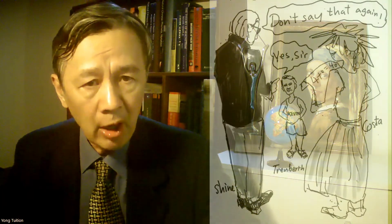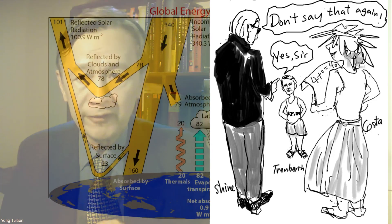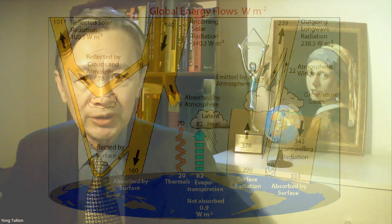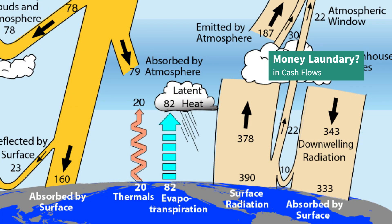In his recent article of autobiographical style, Kevin Trenberth highly regarded his contribution to introducing energy flow diagrams in so-called climate science. Since its appearance in 1997, a number of revisions have been made in this Trenberth diagram of energy fluxes, called cash flow in this talk. This is the latest one published in 2022, just before he retired.